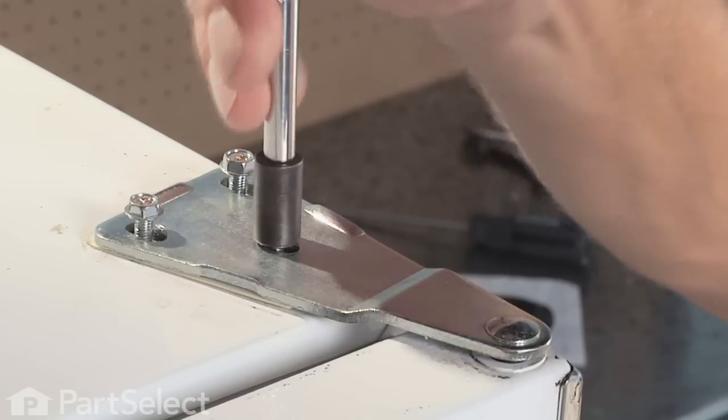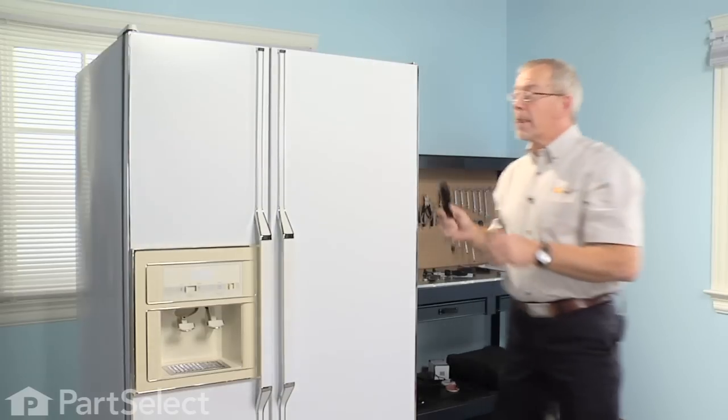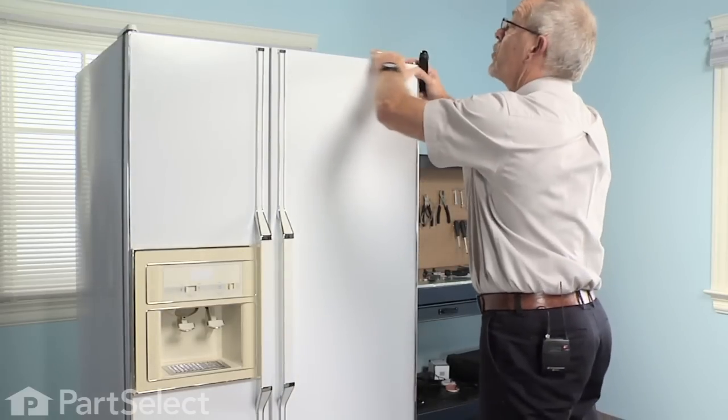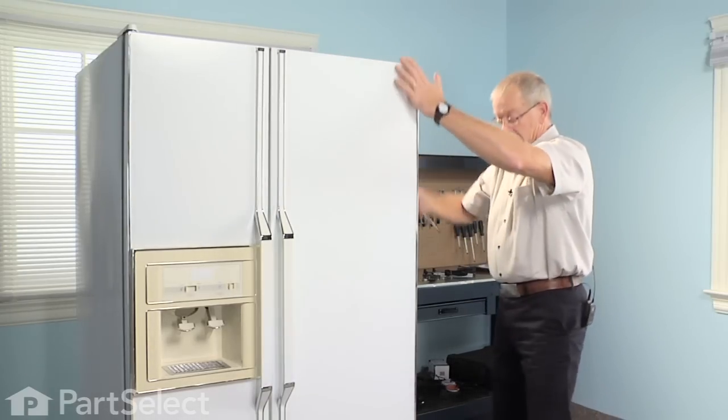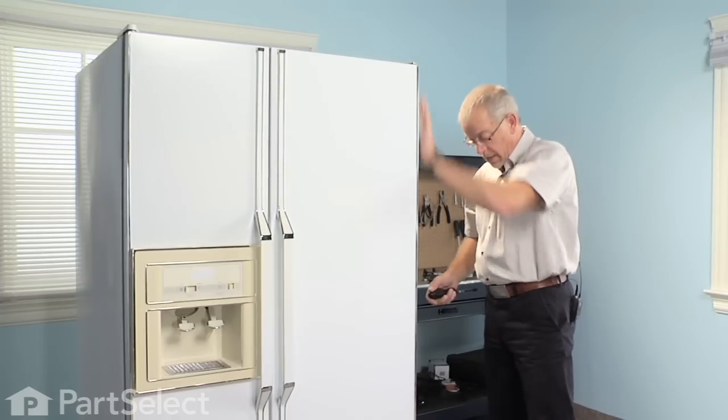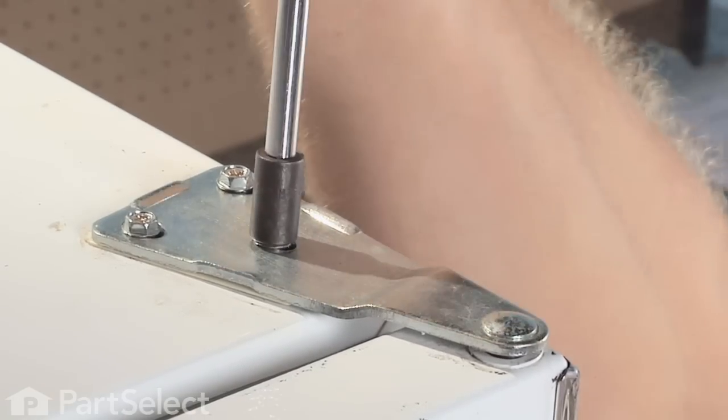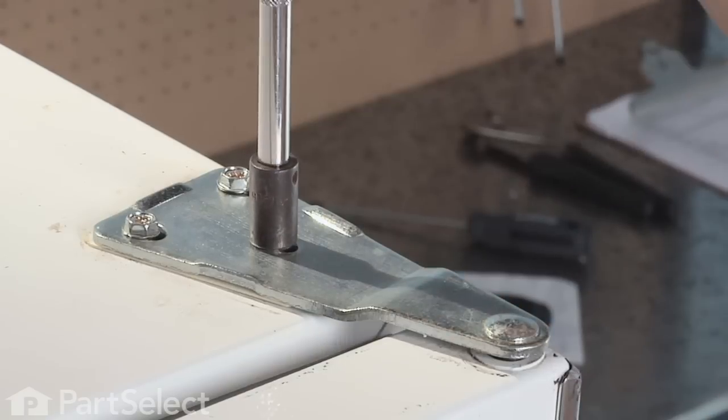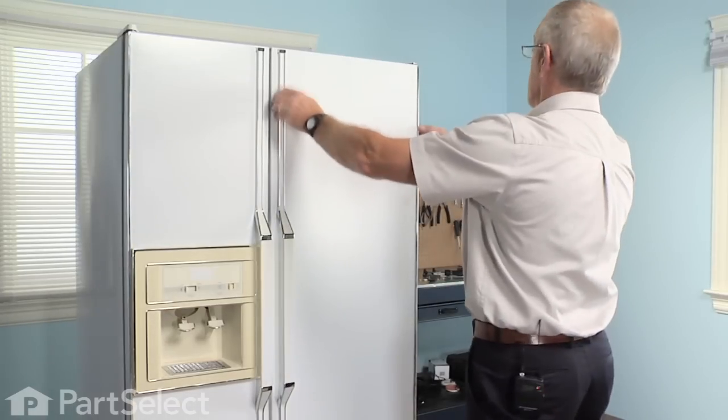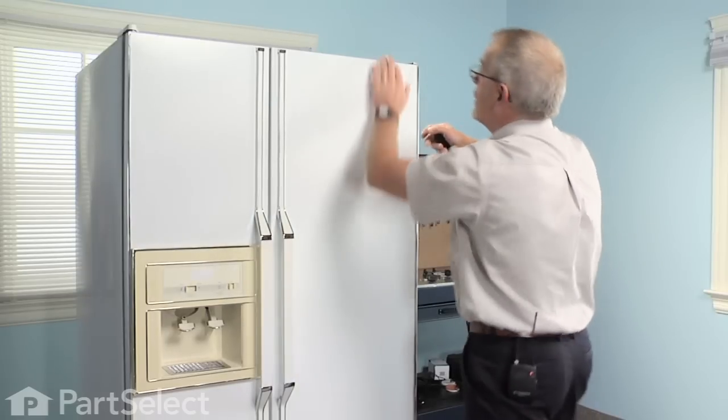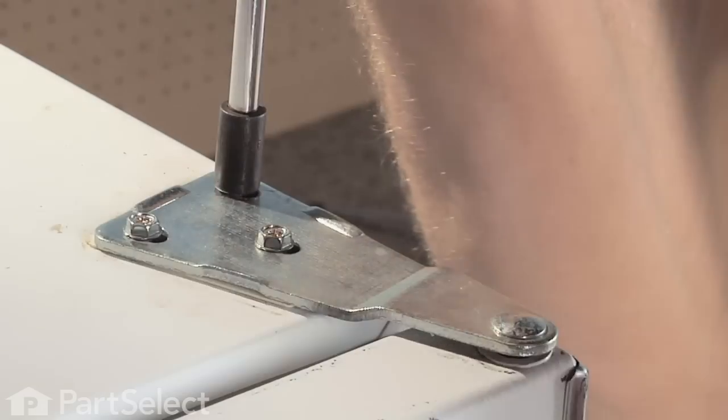We won't snug these up until we've lined the door up properly. Just want to make sure that the door is level with the cabinet on both sides and the top, and if there's equal distance in the gasket at the top and the bottom. Tighten one screw and recheck, and tighten the remaining two screws.